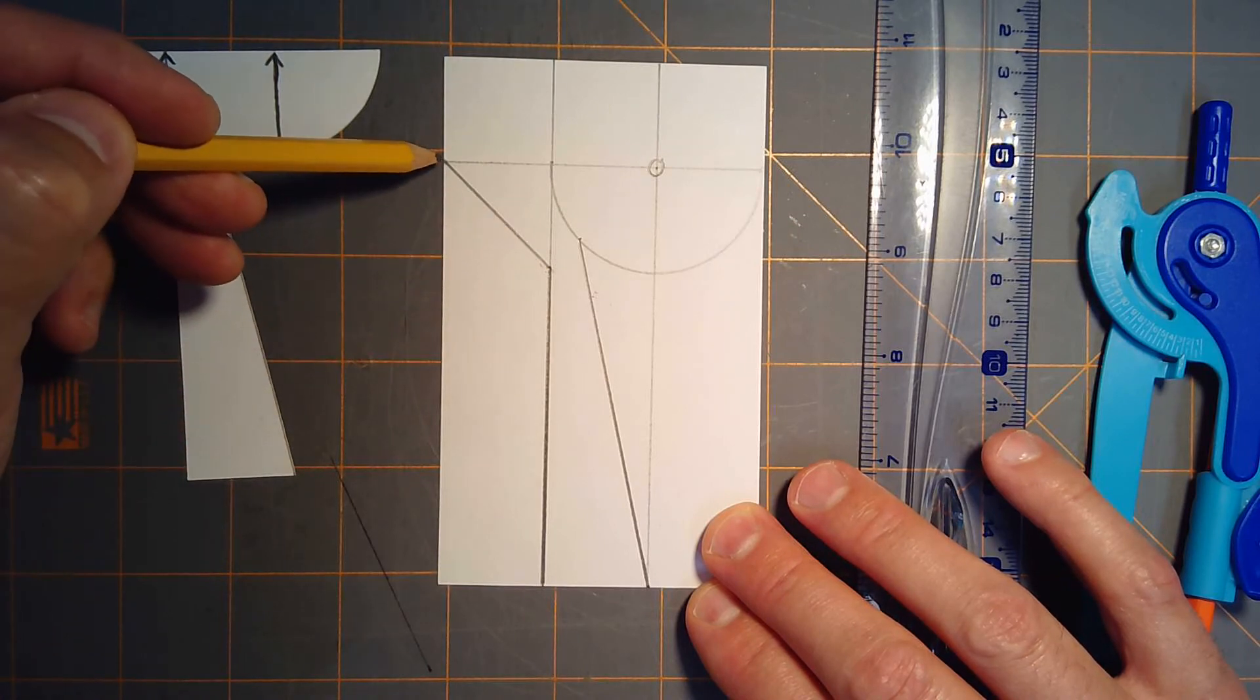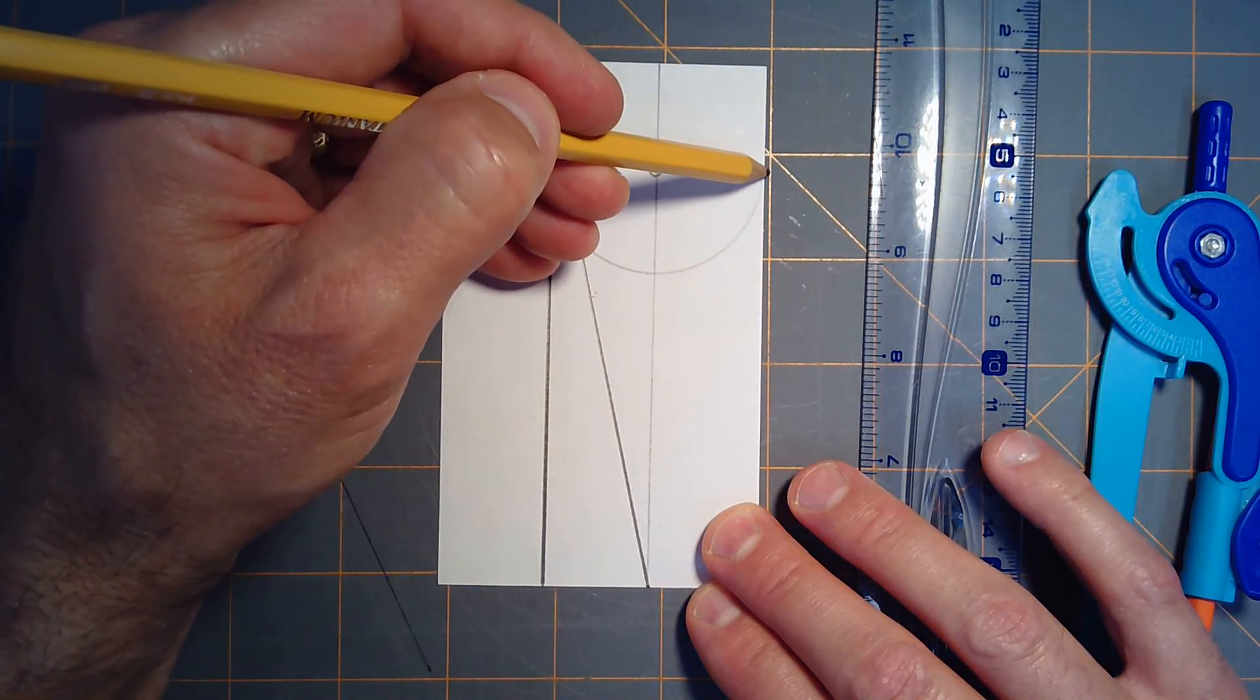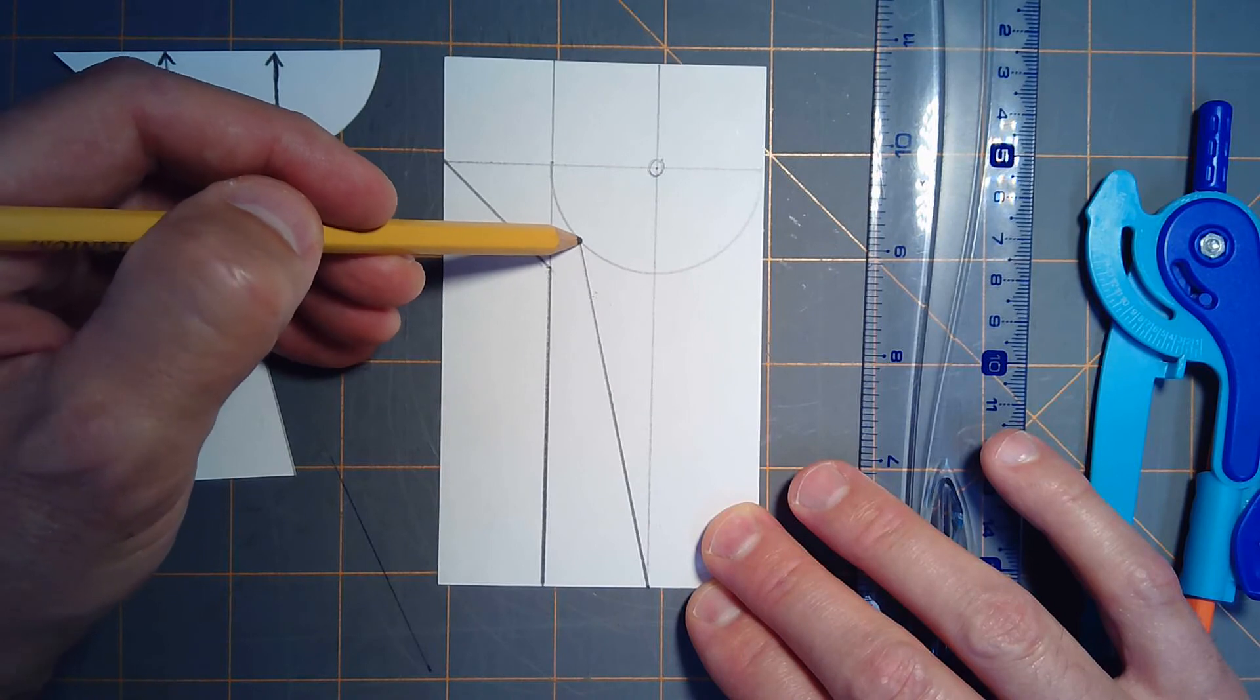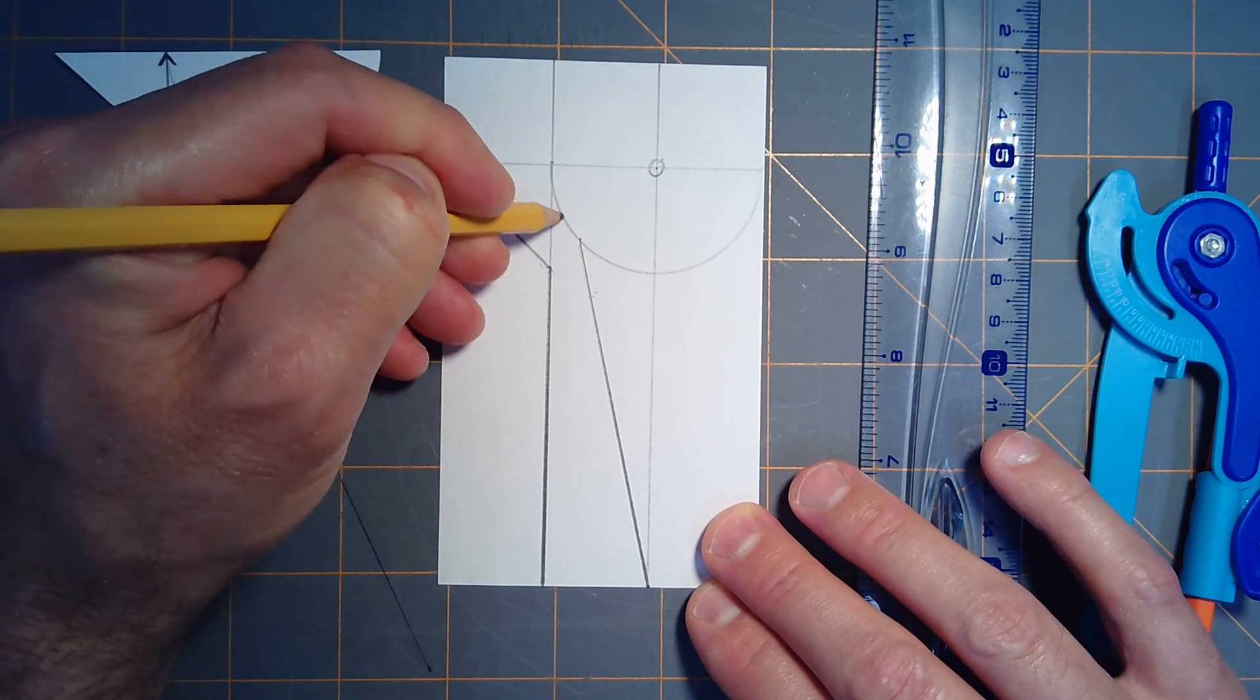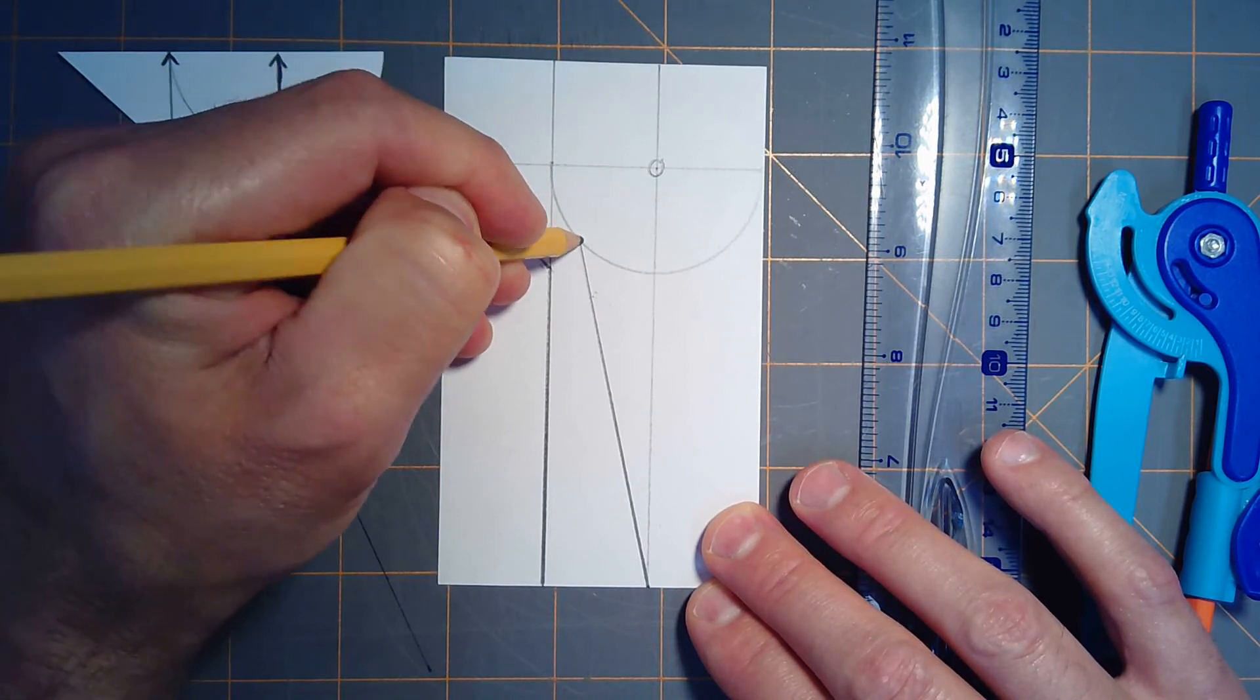So it's important that you don't cut all the way around. You're just going to stop at this point here at the top of the handle and then cut down, and you'll be left with this right here.